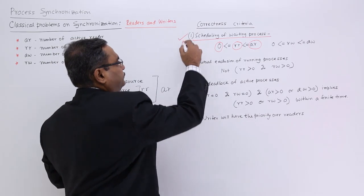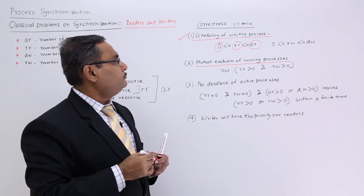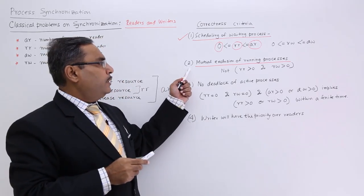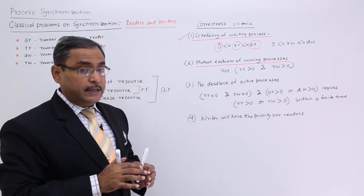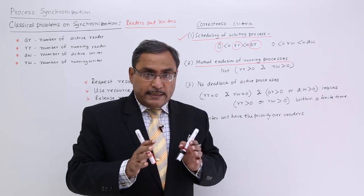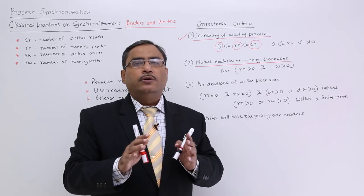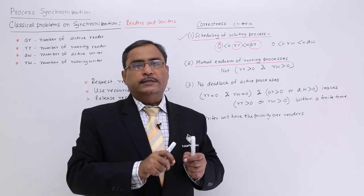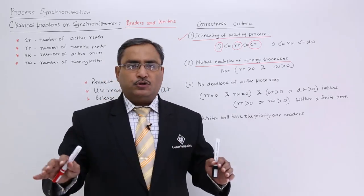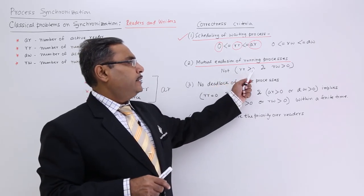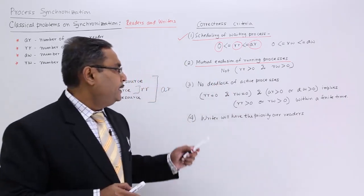Point number two is mutual exclusion of running processes. We write: NOT (RR > 0 AND RW > 0). That means, since this is a critical section problem, reader and writer cannot execute in the critical section at the same time. So running reader greater than 0 as well as running writer greater than 0 simultaneously is not possible.